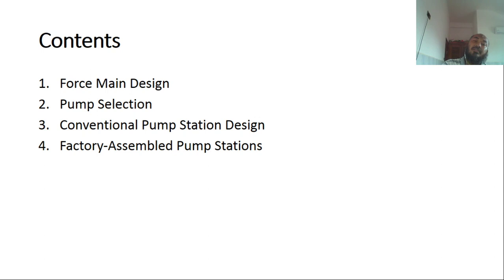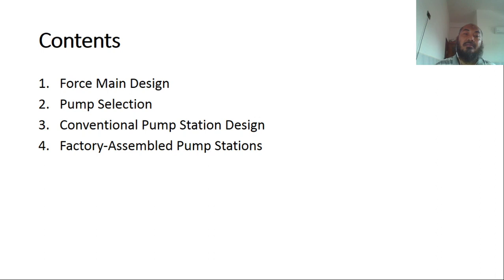Conventional pump station design is designed for large flow, and the permit service is on-site installation and configuration — meaning it's a big one. The factory has to design the pump on-site based on the layout dimensions of the station. Factory assembled pump stations are typically used to handle low flow — a low amount of discharge.